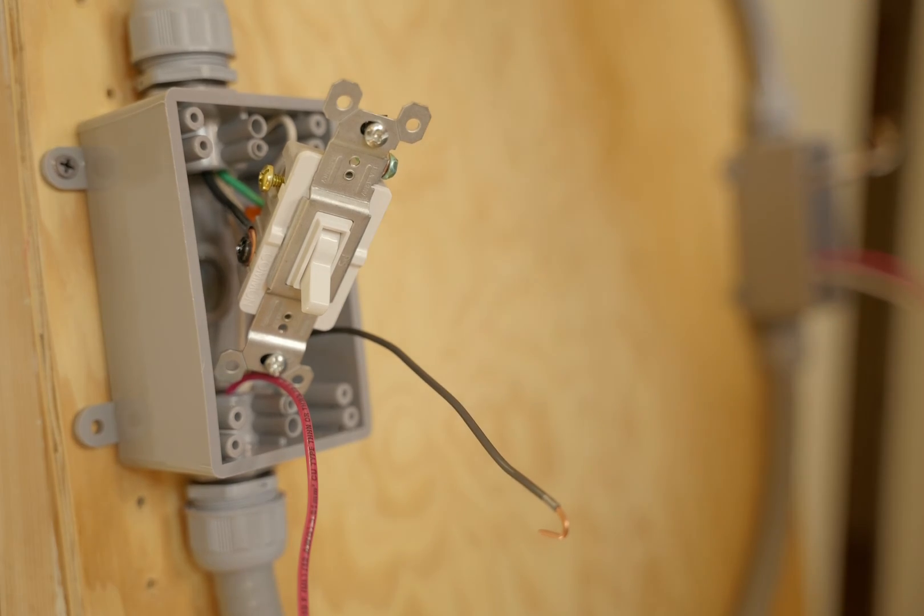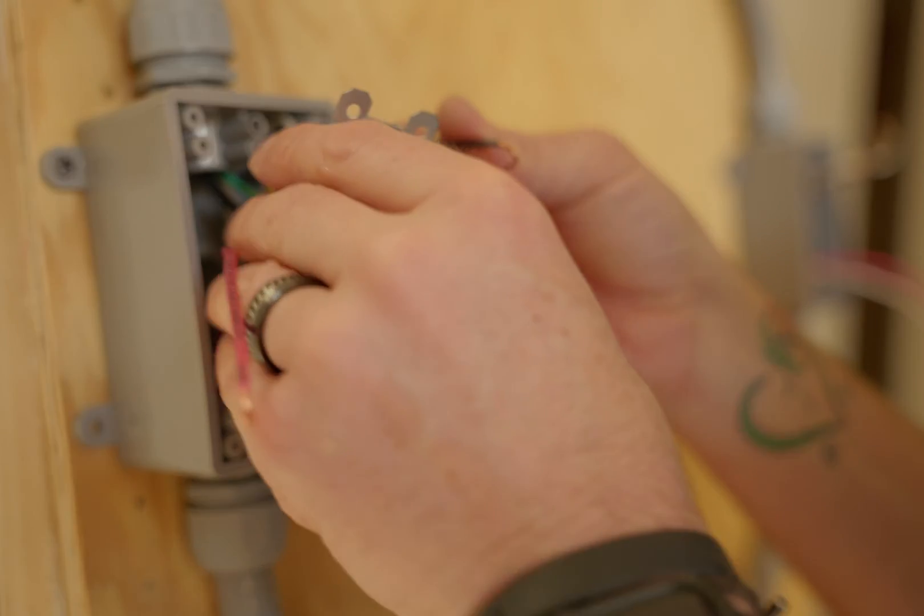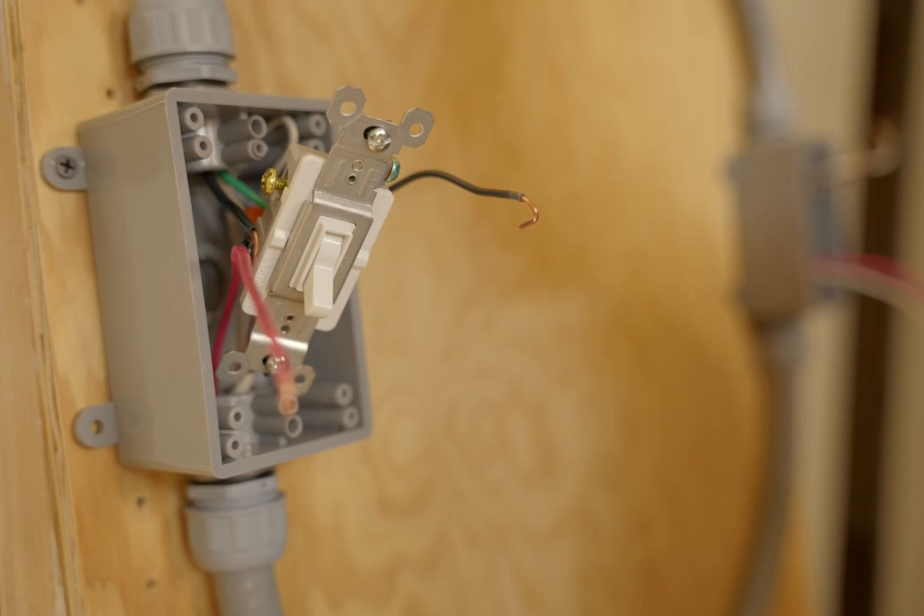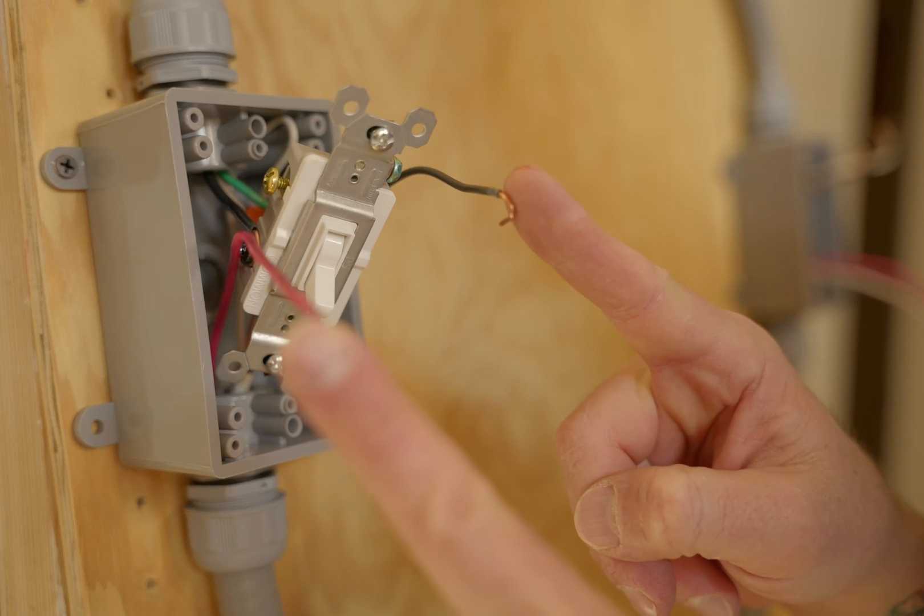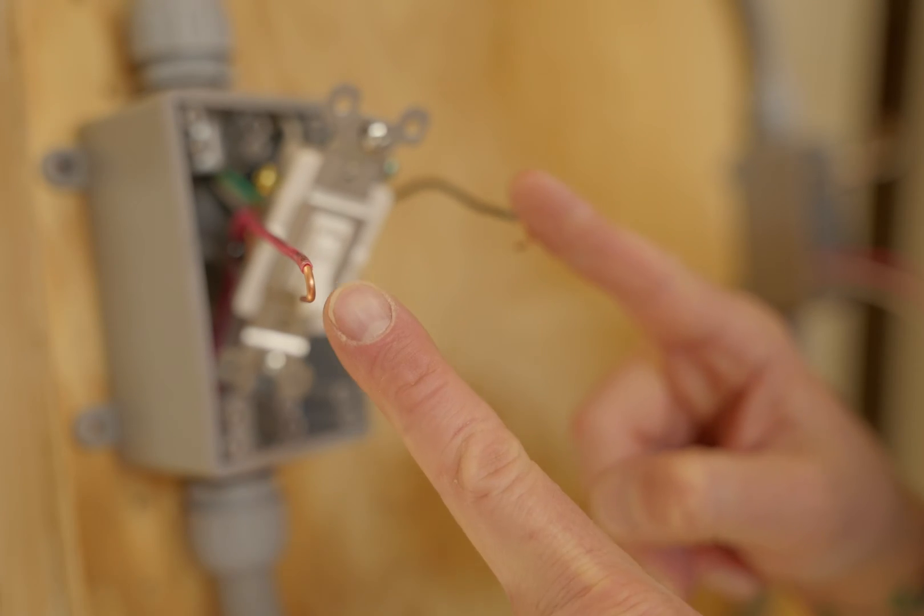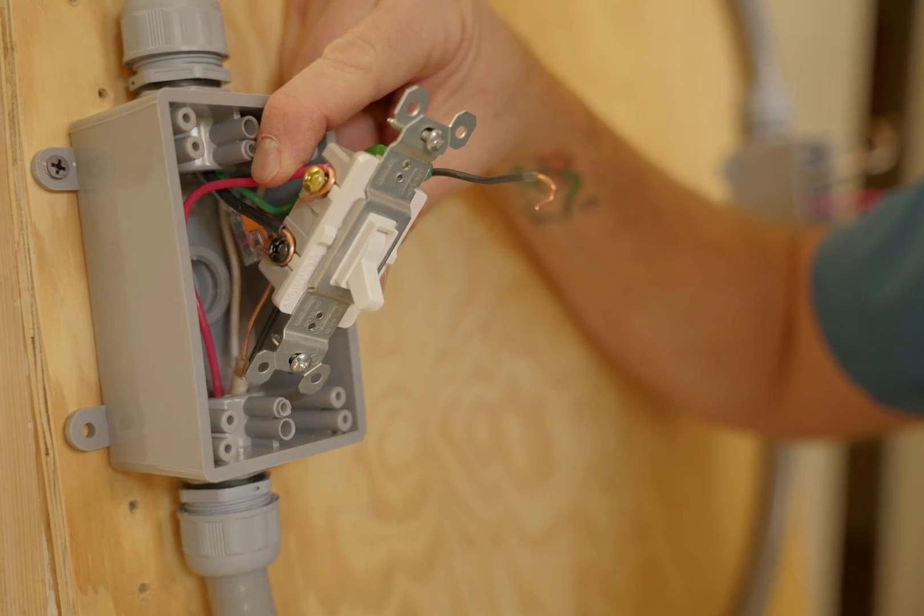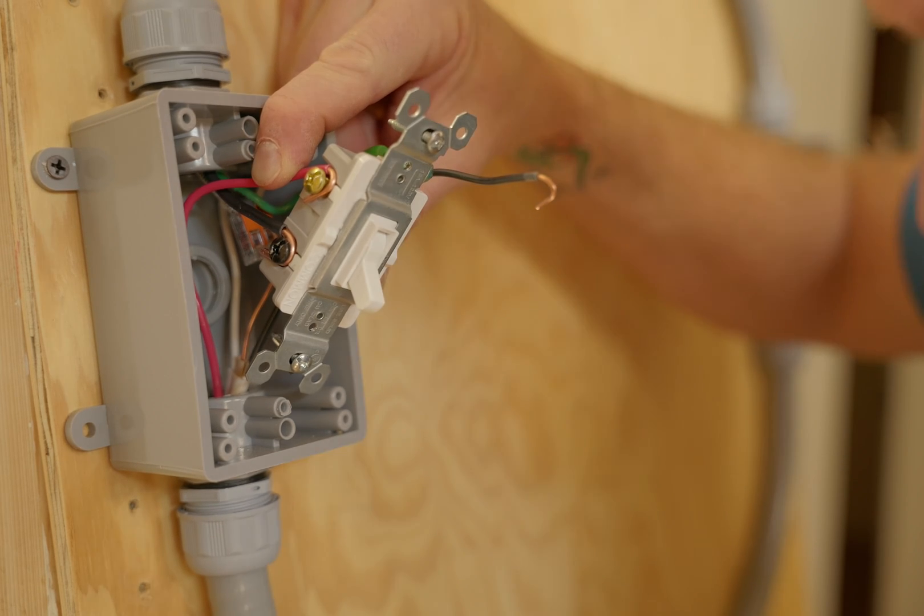Okay, now that the hot wire is on, we want to hook up our red and black. Now, the red and black are our traveler wires. These two wires actually head just from here to the other switch. And that's the two traveling connecting wires that connect the two switches together. Okay, now it doesn't really matter which side you put the red and black on. But just be sure on the other switch, you keep it uniform. If you have the red on the left over here, then put the red on the left over there.